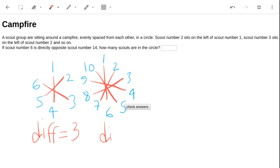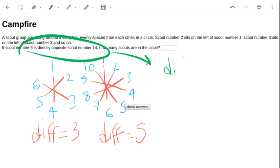So the difference is five when we have ten scouts. Now in the question, six is opposite 14. That tells us that the difference is eight, and that means that the number of scouts will be double eight, which is 16.